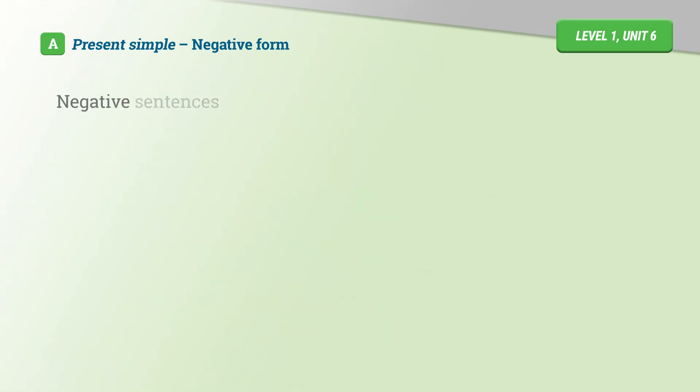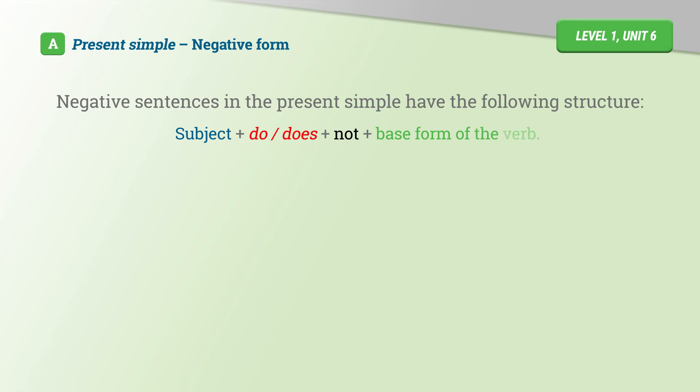Negative sentences in the Present Simple have the following structure: Subject plus do or does plus not plus base form of the verb.